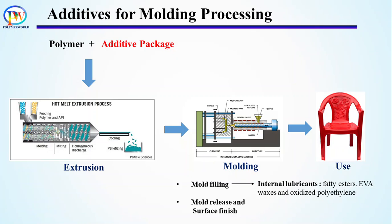For mold release and surface finish, mold release agents are added. They reduce adhesion between the polymer and the mold surface. Common examples are silicon oil, graphite, zinc stearate, and molybdenum disulfide. Use of these additives helps improve the molding process and reduces cost by minimizing defects and equipment stoppages. However, their concentrations are very carefully decided, as excessive amounts may cause issues like flashing due to low melt viscosity and blooming of additives on the product surface.